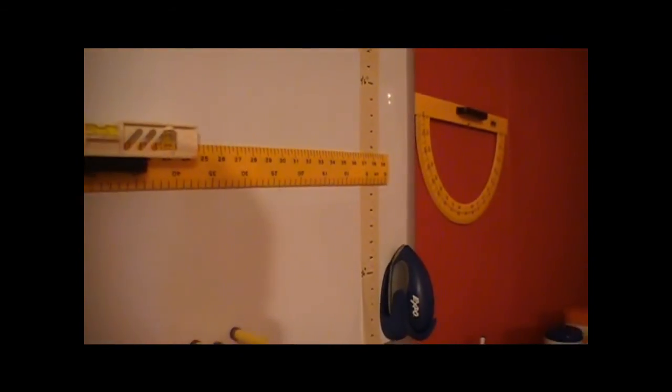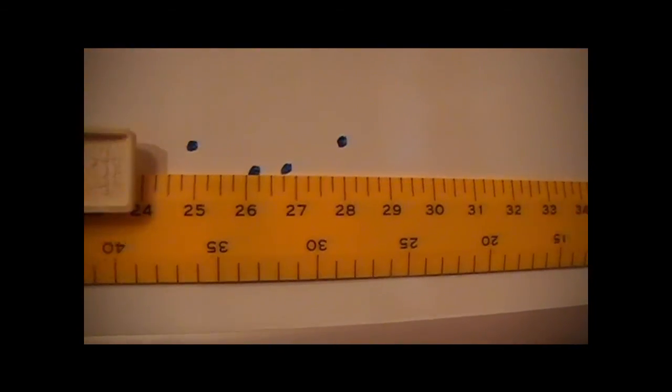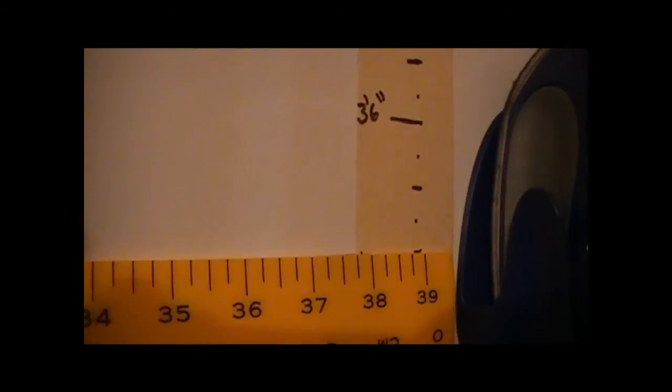You can see they're all very close together. One actually bounced off the back of one of those. So we're going to look and see just what measurements we get from the height of those. Looks like our shots were between three foot four and three foot five. You can tell because that's level.